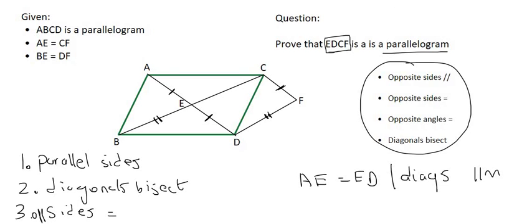Now have a look here. We can straight away see that ED is the same as CF. So we've just proved that one of the sides, or one pair of sides, is equal.